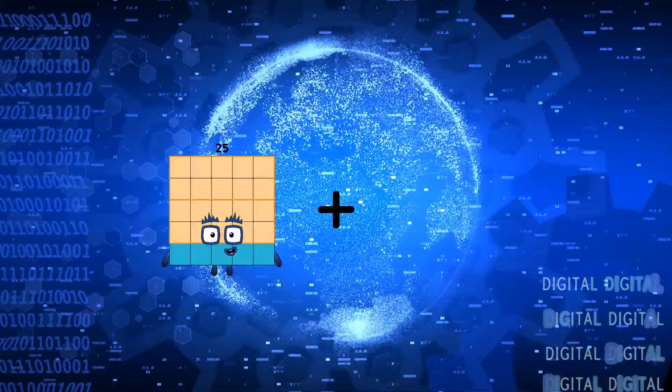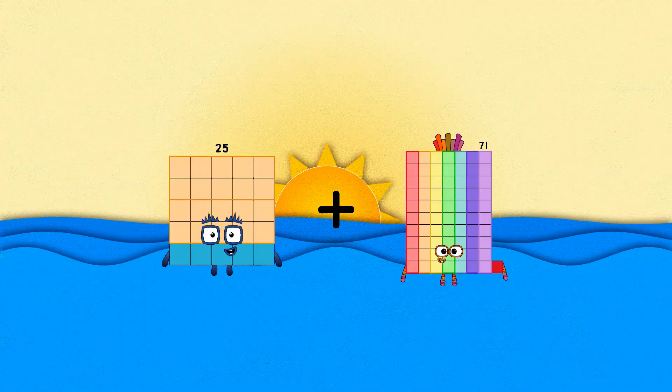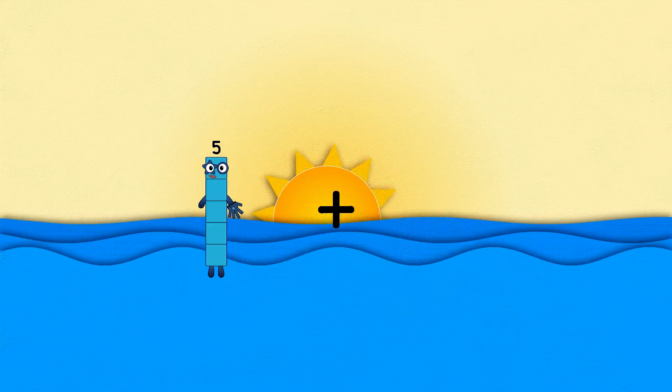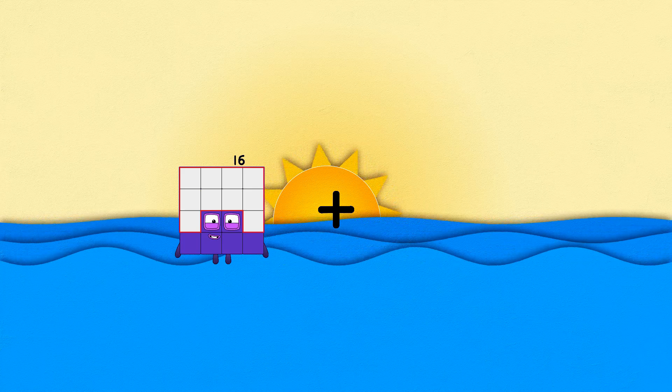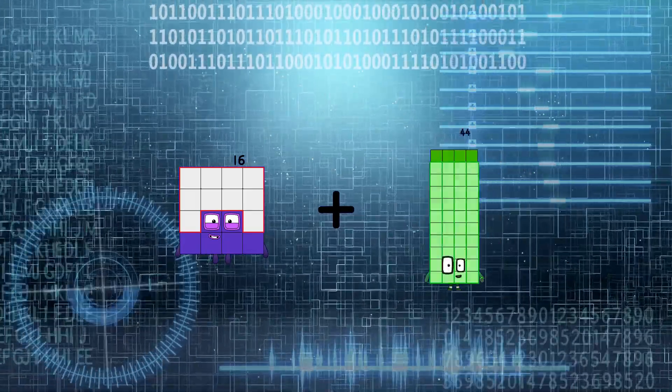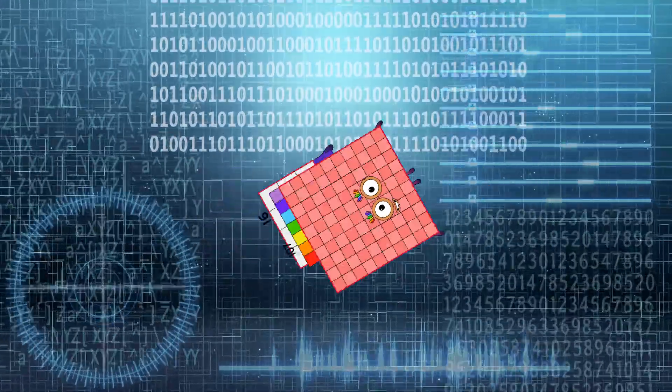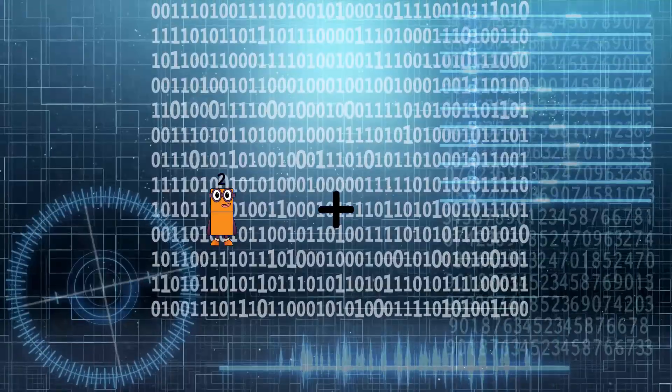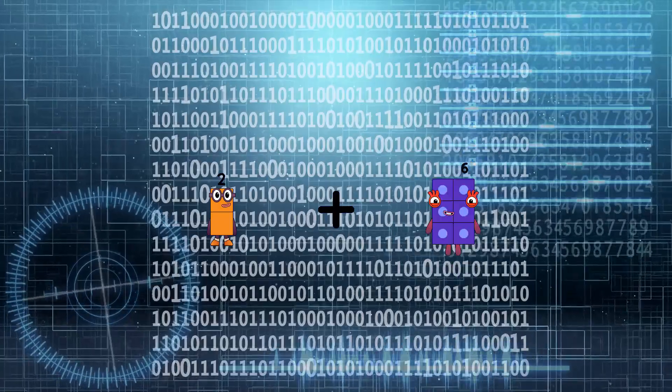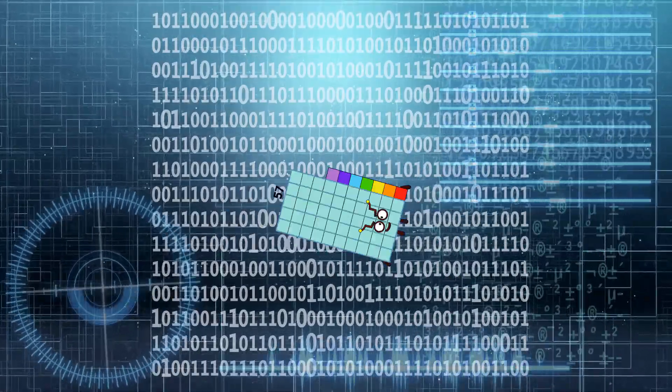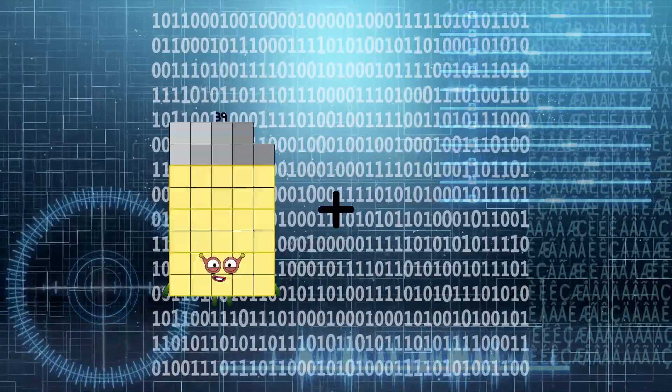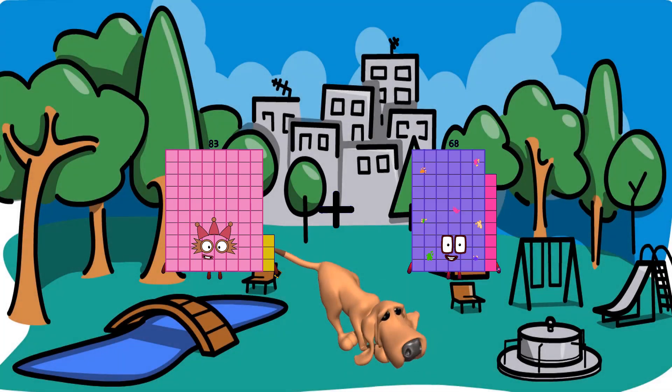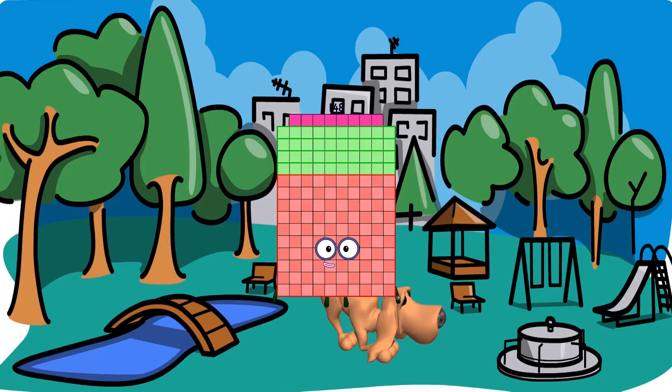16 plus 107 equals 123. 2 plus 57 equals 59. 83 plus 65 equals 148.